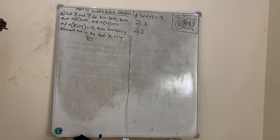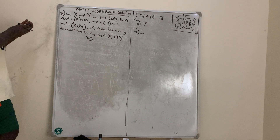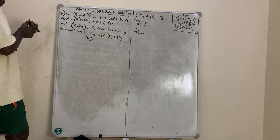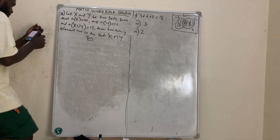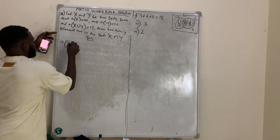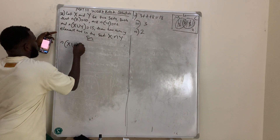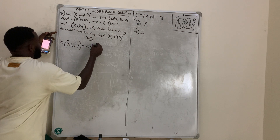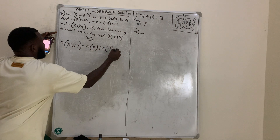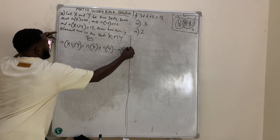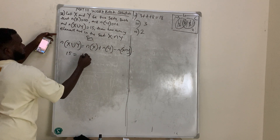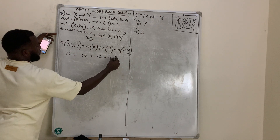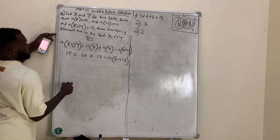You should know the formula: the number of X union Y is simply the number of X plus the number of Y, minus the number of X intersection Y. So substituting the given values: 15 is equal to 10 plus 12 minus the number of X intersection Y.